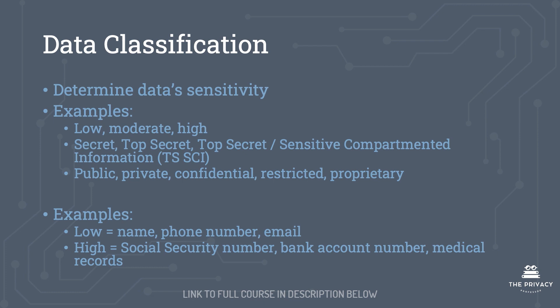When we talk about data classification, we're determining the data's sensitivity. There are a few different classification buckets. One is low, moderate, and high sensitivity. Another, common in the federal government, includes secret, top secret, and top secret sensitive compartmented information (TS-SCI). Finally, you may see data labeled as public, private, confidential, restricted, or proprietary.